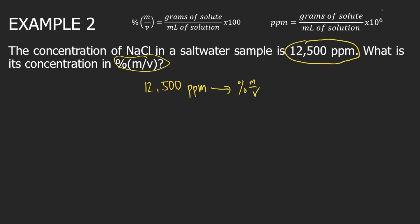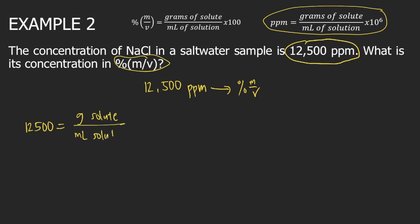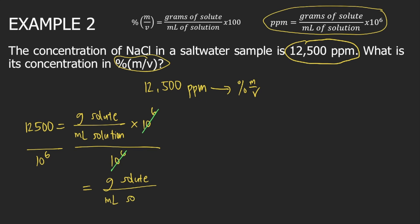First, we will use the equation for ppm. According to the equation, ppm — so 12,500 — is equal to grams of solute divided by ml of solution, times 1 million or 10 to the 6. So you divide both sides of the equation by 10 to the 6. The 10 to the 6 will cancel on the right side, leaving grams of solute divided by ml of solution. On the left side, 12,500 divided by 1 million equals 0.0125.